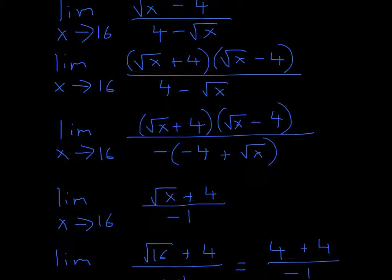So once we take it out, it'll become a negative 4 and a positive square root of x. Because if you distribute this, you'll get positive 4 right here. And here, if you distribute it, you'll get negative square root of x. And that's right here.